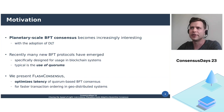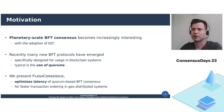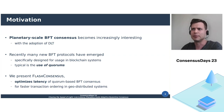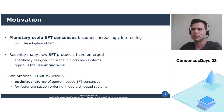Planetary scale BFT consensus becomes increasingly interesting with the adoption of distributed ledger technology. In the last years, many novel BFT protocols have emerged, and they were often specifically designed for their use in blockchain systems. Examples include HotStuff, Mir-BFT, Tendermint, Kauri, and many more. These protocols require communication between the replicas to guarantee consistent decisions, for which they typically employ quorums.